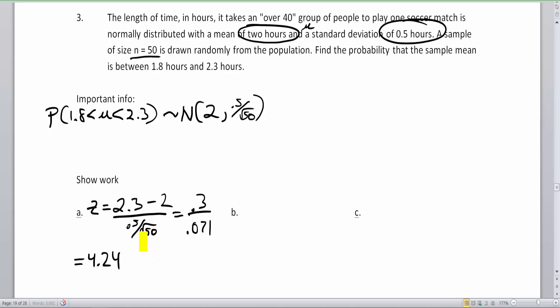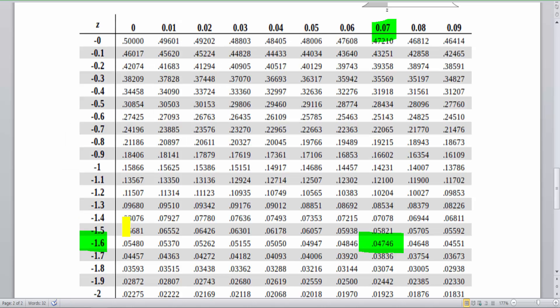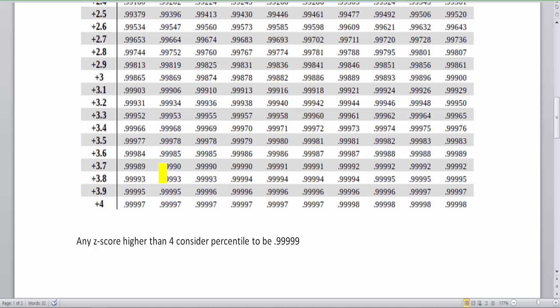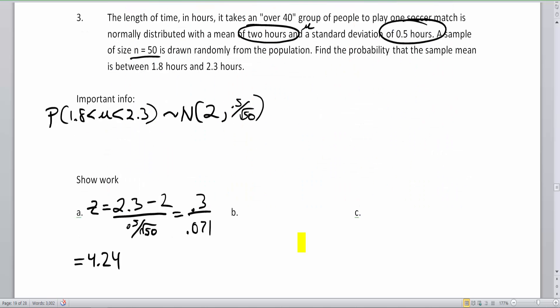Now, when I look up this Z score, you're going to be kind of like, what? How do I do that? So I'm glad to do this example with you on the Z chart. I'm going to try to look up the Z score of 4.24. And it says any Z score higher than 4, consider the percentile to be 0.99999. If I went more than four standard deviations, I'd have to add another decimal to each of these here. And we're just not into significant figures. So what this means is that since I'm at 4.24, my table value is going to be 0.99999.